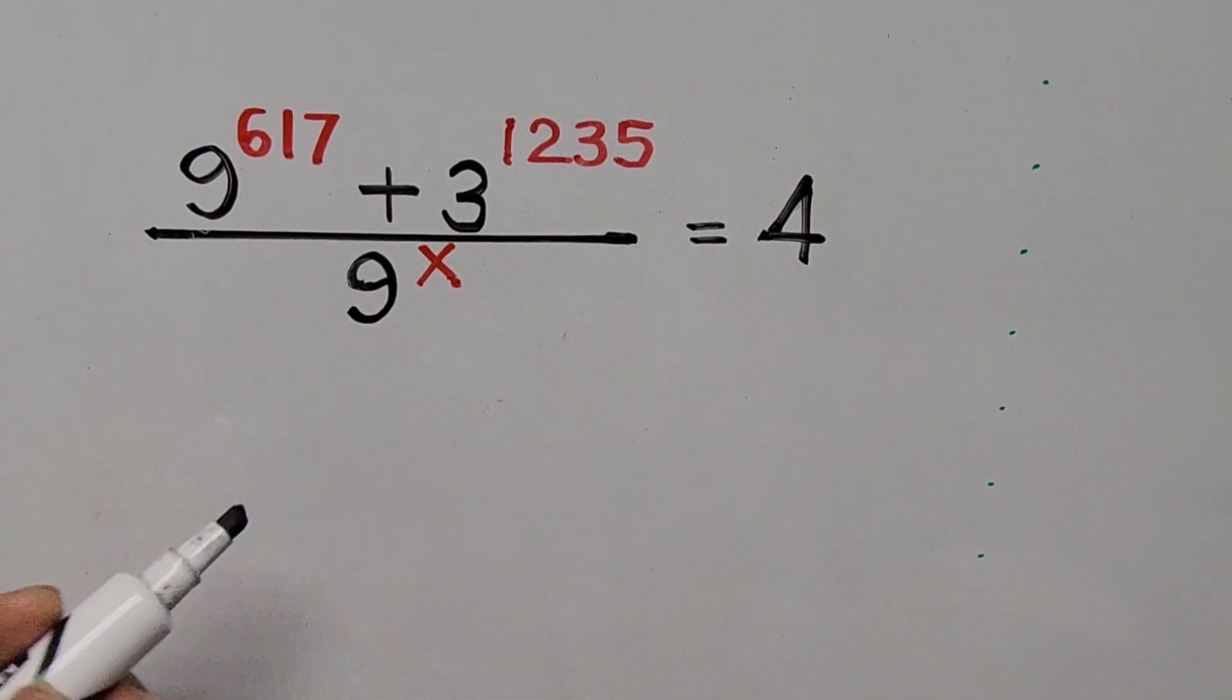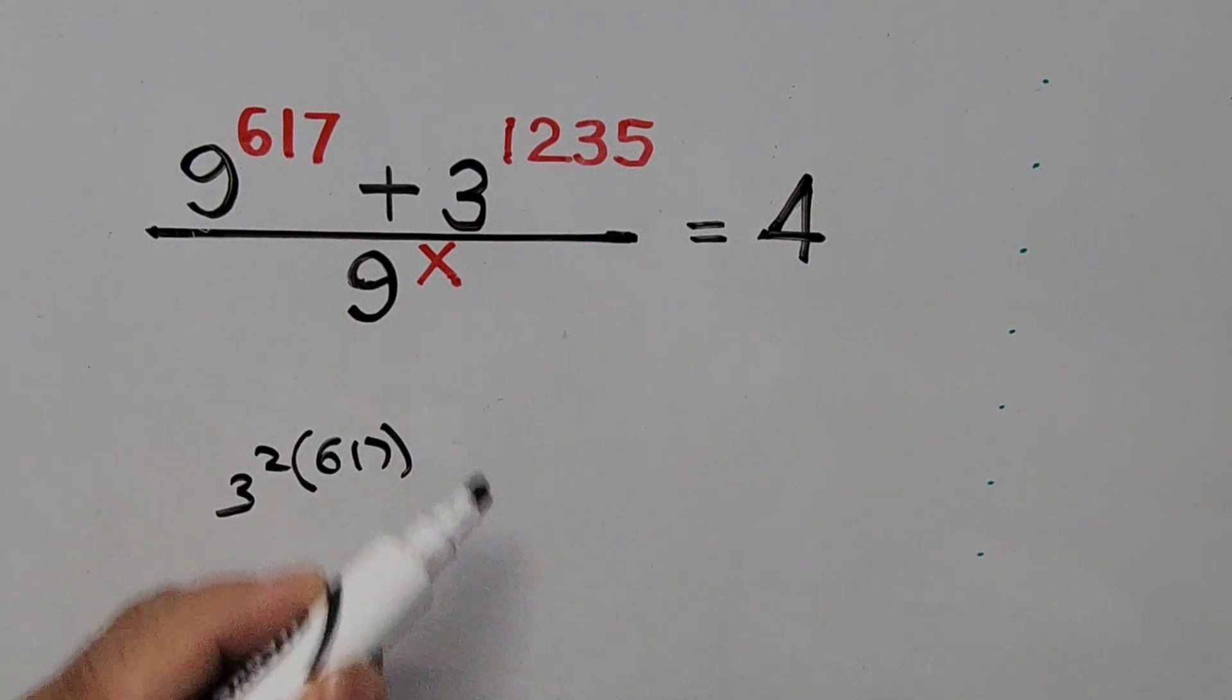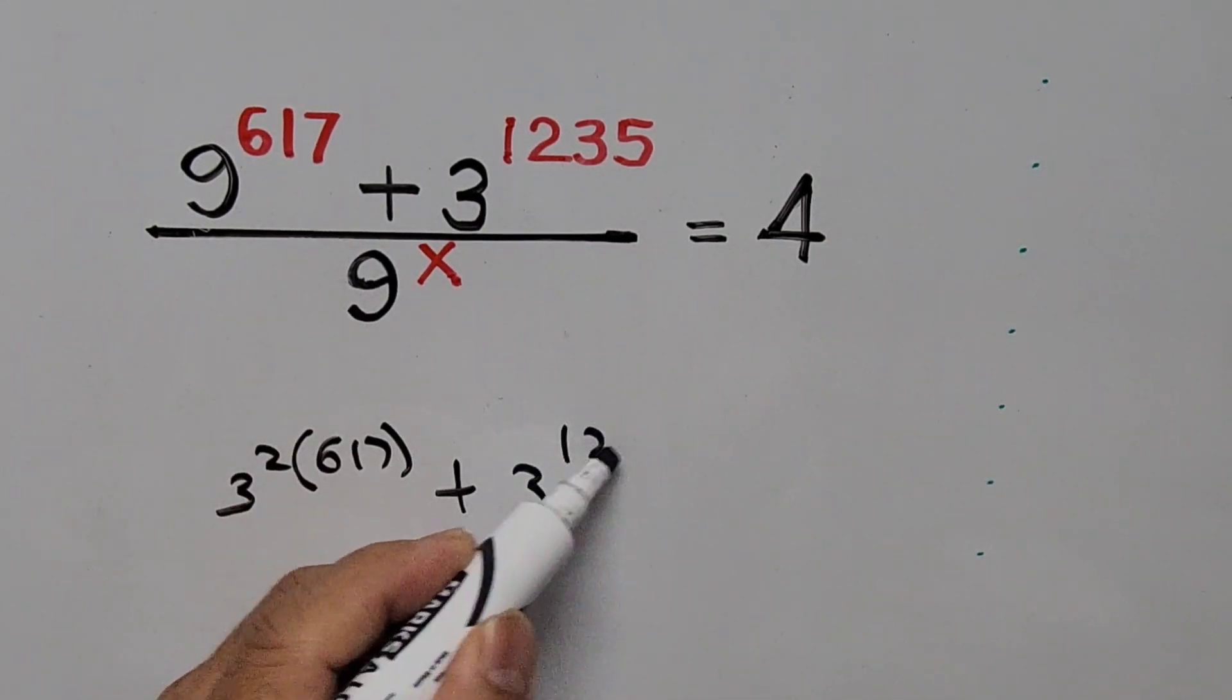So the equation can now be written as 9 is 3 squared then raise to 617, then plus 3 to the power of 1235.